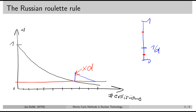You can choose a different D number. For instance, we can choose 10, so in this case 1 over D is 0.1. That means 9 out of 10 neutron histories will be killed when the neutron weight drops below the weight limit, and 1 out of 10 neutron histories will continue with its neutron weight increased 10 times.